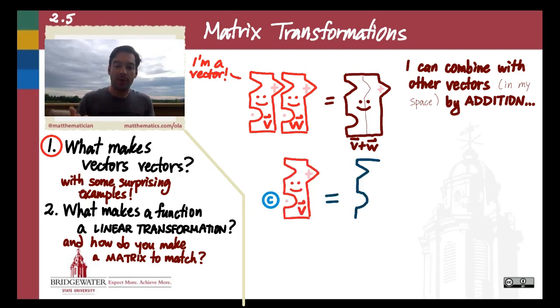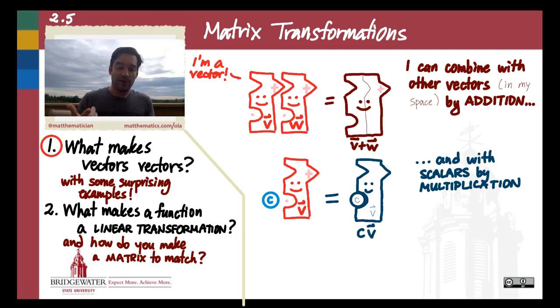Likewise, vectors are also defined by their capability to be multiplied by scalars. We think of scalars as being real numbers, but really scalars can be numbers that come from any number field that we can study even more abstractly. But for us, it's almost always real numbers. So vectors are characterized by their ability to combine with other vectors by addition and to combine with scalars by multiplication.